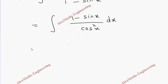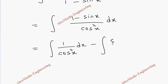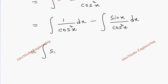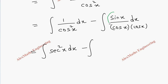We now divide the numerator individually over cos squared x. The first term is the integral of 1 over cos squared x dx, and the second is minus the integral of sin x over cos squared x dx. The first term is the integral of secant squared x. For the second, cos squared x can be written as cos x times cos x, so sin x over cos squared x becomes tan x times secant x.